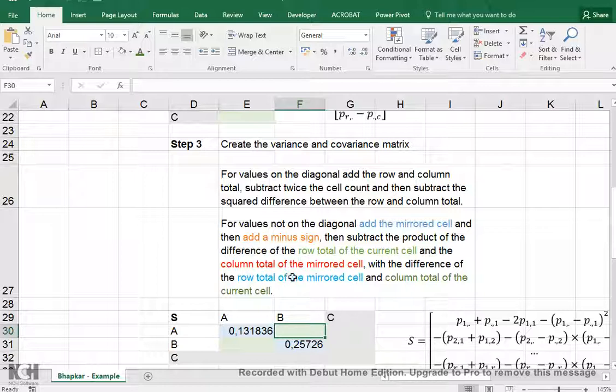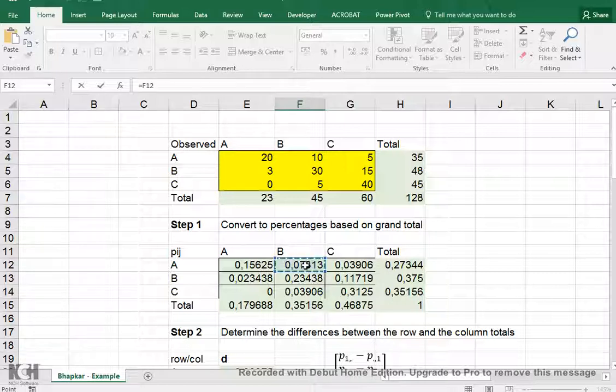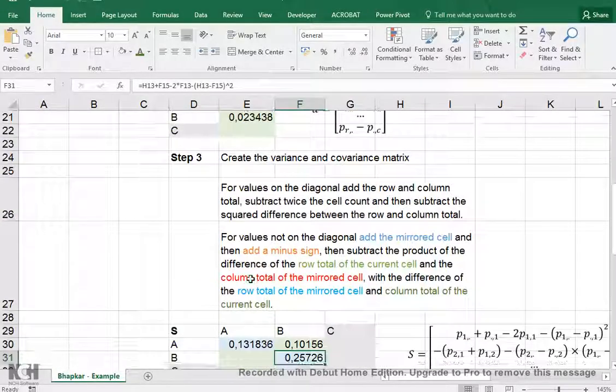Now, for anything that's not on a diagonal, it becomes slightly more complex. Add the mirrored cell, so what we want is the cell itself, which is this one, and its mirror. So this is row one, column two, and then we flip that around to get column one, row two, so this is its mirror.